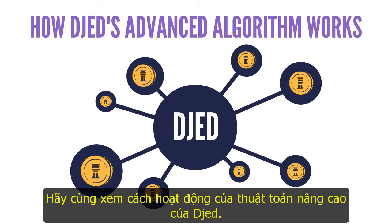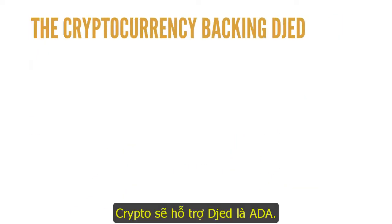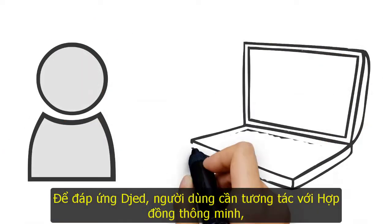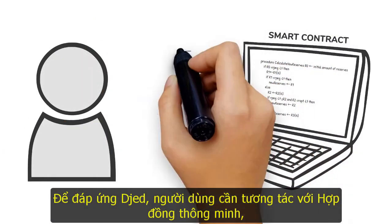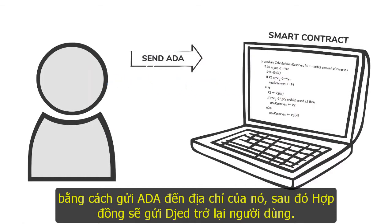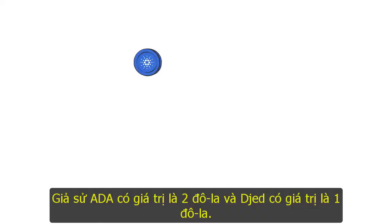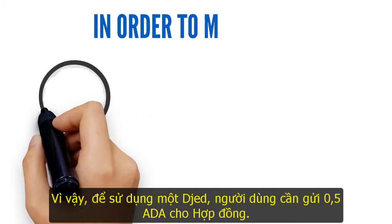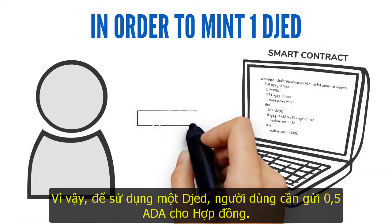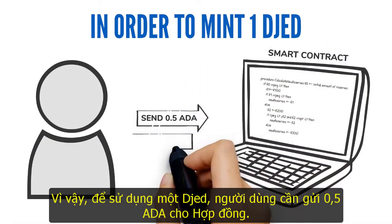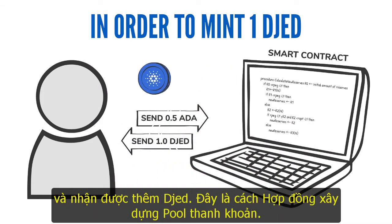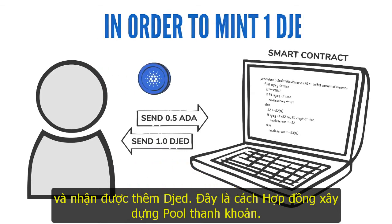The cryptocurrency backing Djed is ADA. In order to mint the Djed stablecoin, the user needs to interact with the smart contract by sending ADA to its address, after which the contract sends Djed back to the user. For example, if ADA is worth two dollars and Djed is worth one dollar, the user needs to send 0.5 ADA to the contract to mint one Djed.